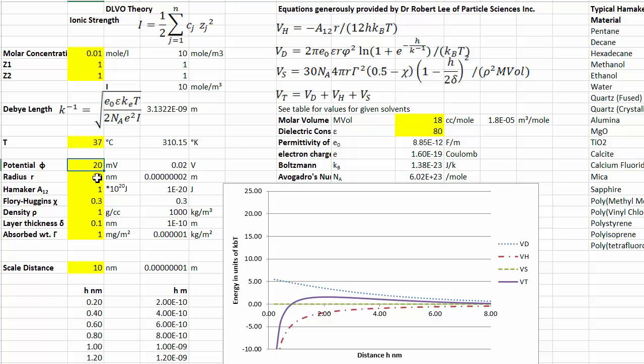Now when you put on a zeta potential of something like 20 millivolts, you get a stabilization from the Debye term of about 6 KBT, but that's nowhere near enough to stabilize things. But I just want to show one other thing.